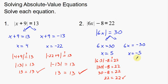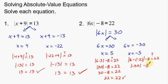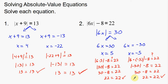What about negative 5? The absolute value of 6 times negative 5, minus 8 — does that equal 22? 6 times negative 5 is negative 30. The absolute value of negative 30 is 30, and 30 minus 8 is 22. Yes, that works too. So 5 and negative 5 are both solutions.